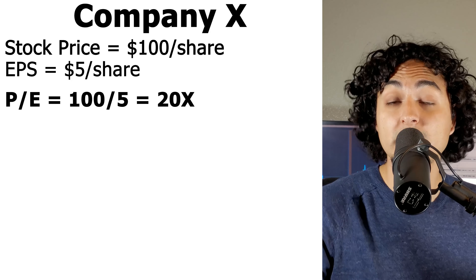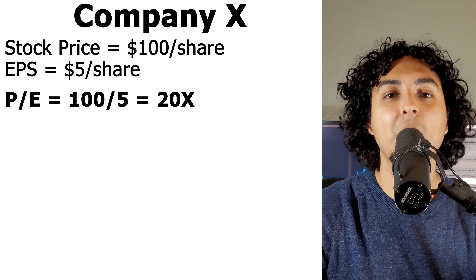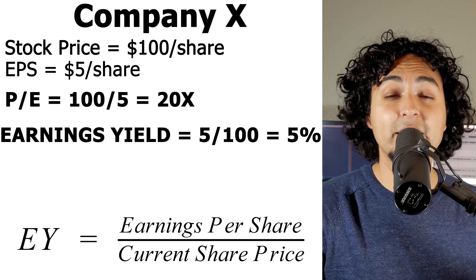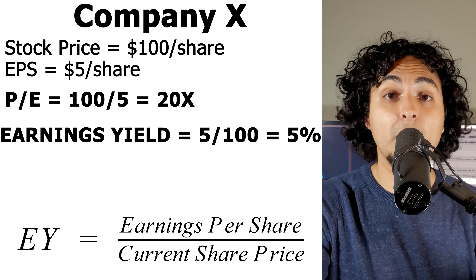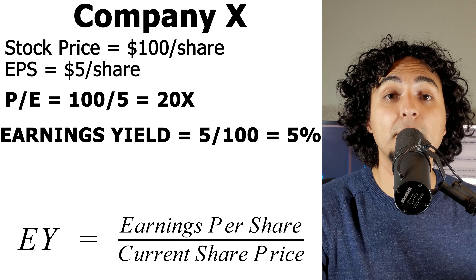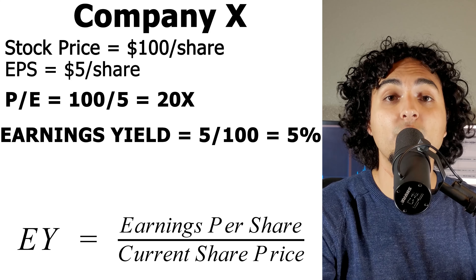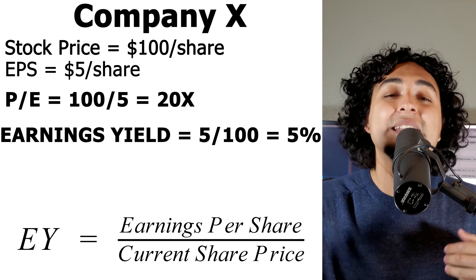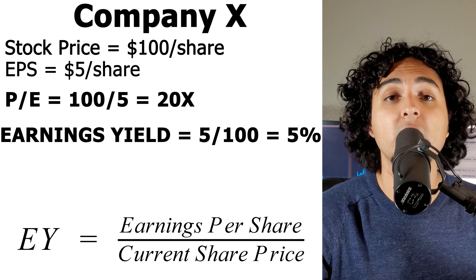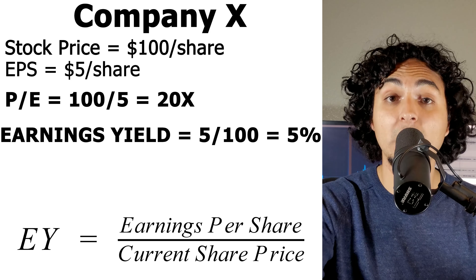To calculate the earnings yield, you do the opposite: divide the earnings per share by the current stock price. In this case, it's $5 divided by $100, which gives you 5%. This is essentially the rate of return on investment for a company's earnings relative to the current stock price.